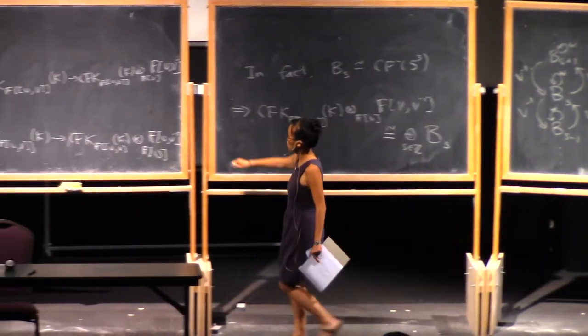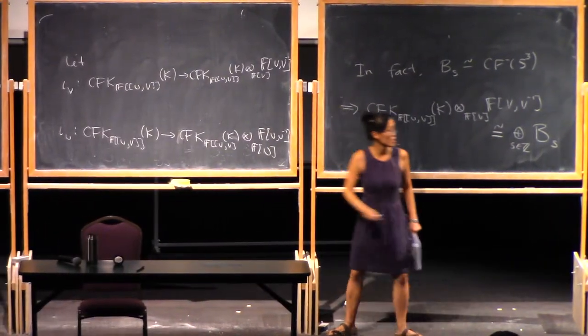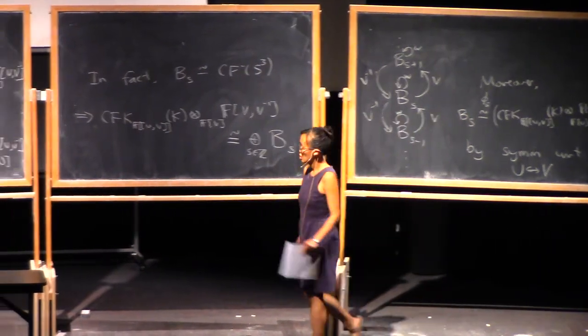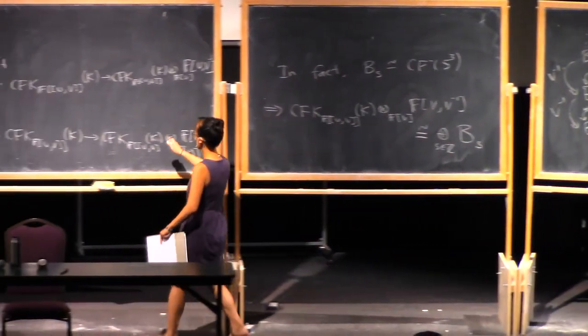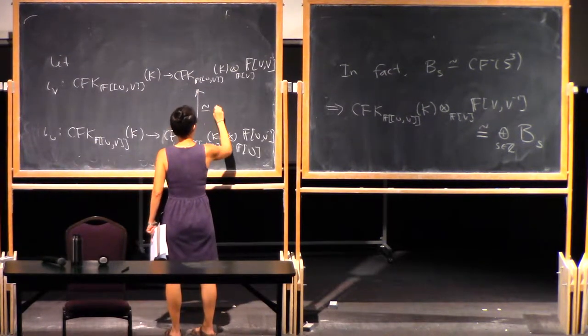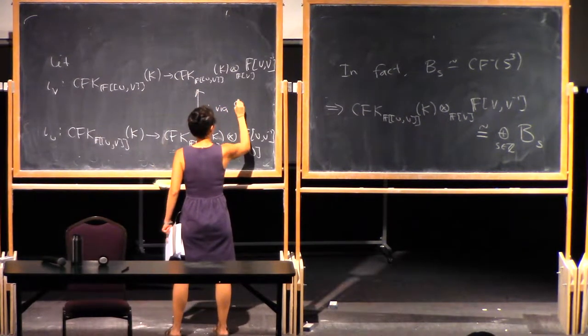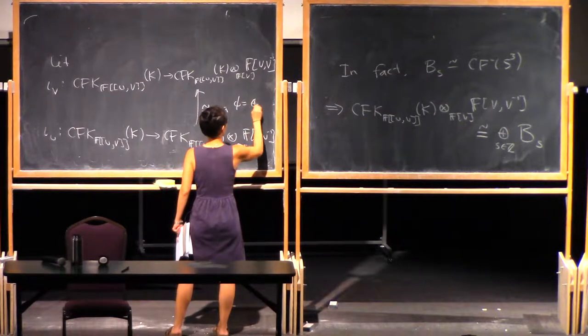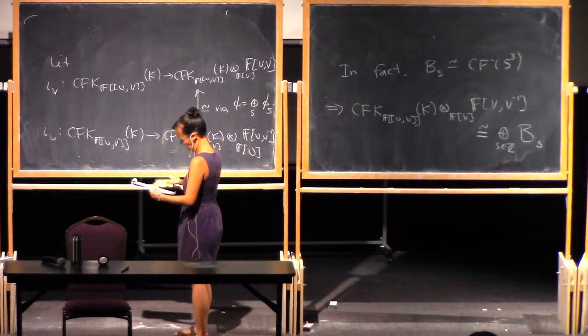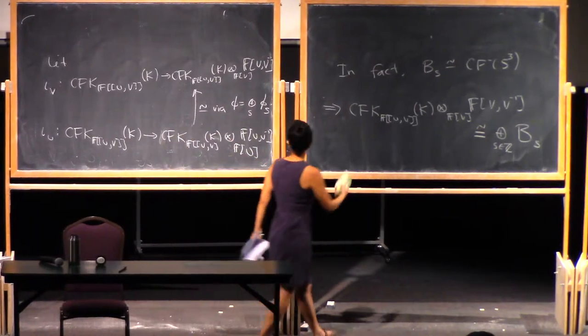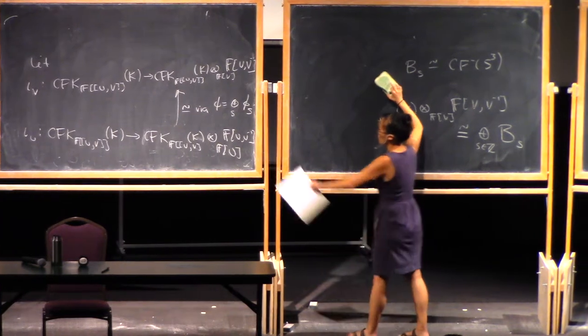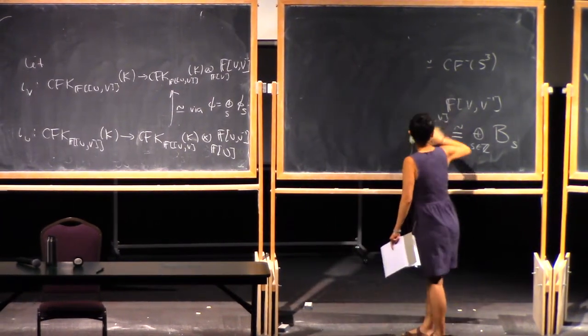Remember, we also have this chain homotopy equivalence between these. That was this v sub s that I wrote right here. So we have this map. So these are homotopy equivalent via phi, which will just be the direct sum of these phi sub s's. Okay, great. So we've done a bunch of algebraic things. We have this homotopy equivalence there.